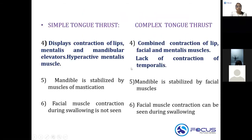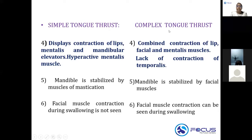The fourth point is the most frequently asked MCQ point. In simple tongue thrusting, there will be contraction of your lips, mentalis muscles, and mandibular elevators — you see a hyperactive mentalis muscle. In complex tongue thrusting, there will be combined contraction of lip, facial, and mentalis muscles, and there will be lack of contraction of the temporalis muscle.